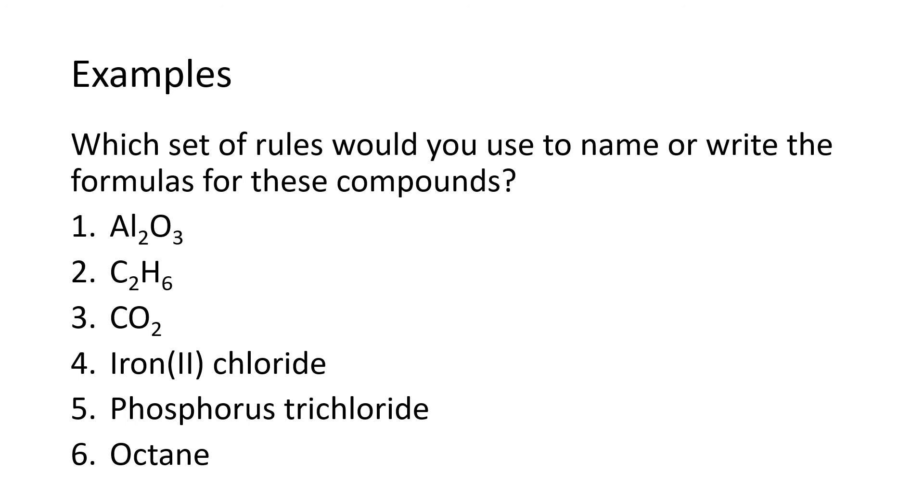So if we're taking a look at the very first one, the first element is aluminum and aluminum is a metal, so I'll abbreviate that with an M for metal. And the second element is oxygen, which is a nonmetal. So this compound consists of a metal plus a nonmetal, which means it's an ionic compound. So we would use the rules for ionic compounds to write the name for Al2O3.